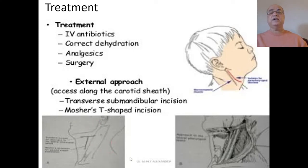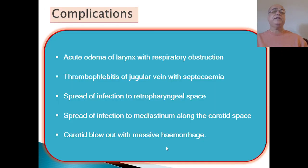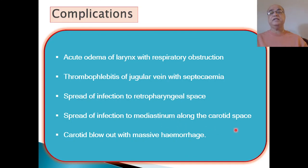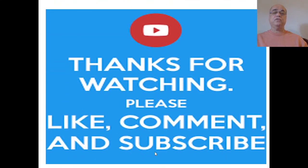If left untreated, complications include acute laryngeal edema causing respiratory obstruction requiring emergency tracheostomy, thrombophlebitis of the jugular vein with septicemia, spread of infection to the retropharyngeal space, spread downward to the mediastinum along the carotid space, and even carotid blowout with massive hemorrhage which can be lethal. With that we come to the end of today's discussion. Please like, comment, and subscribe the channel.